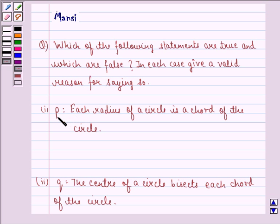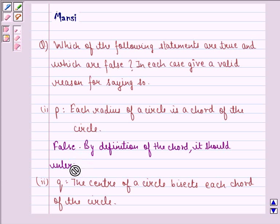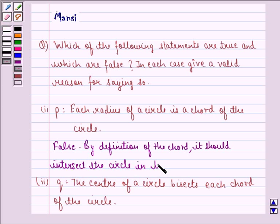The first statement is P, that is, each radius of a circle is a chord of the circle. Our answer to the first part would be this statement is false because by definition of the chord, it should intersect the circle in two points. So our answer to the first part is this.